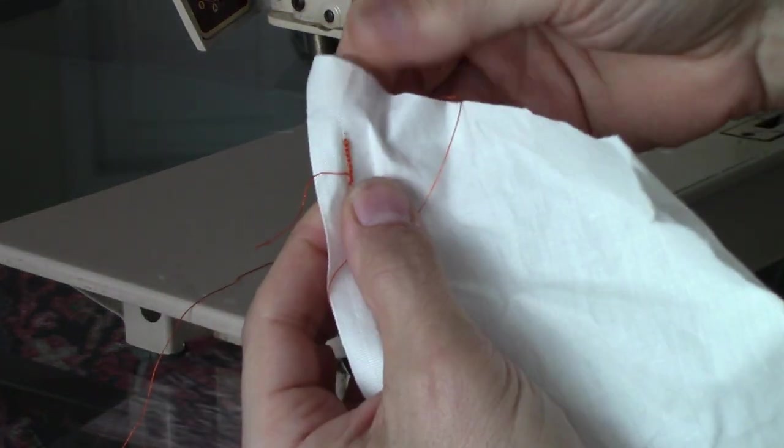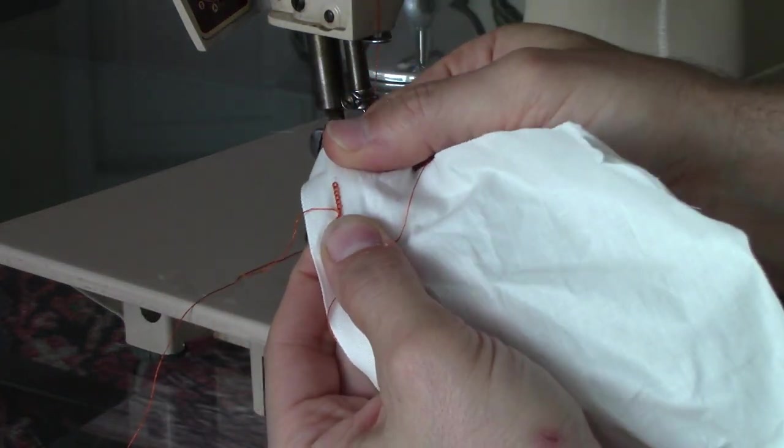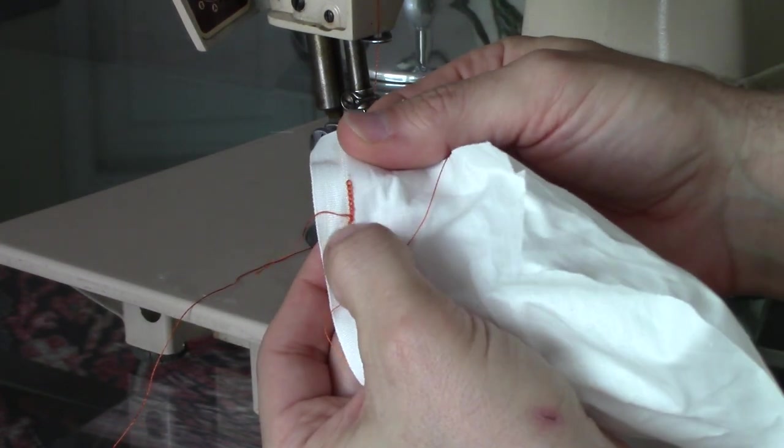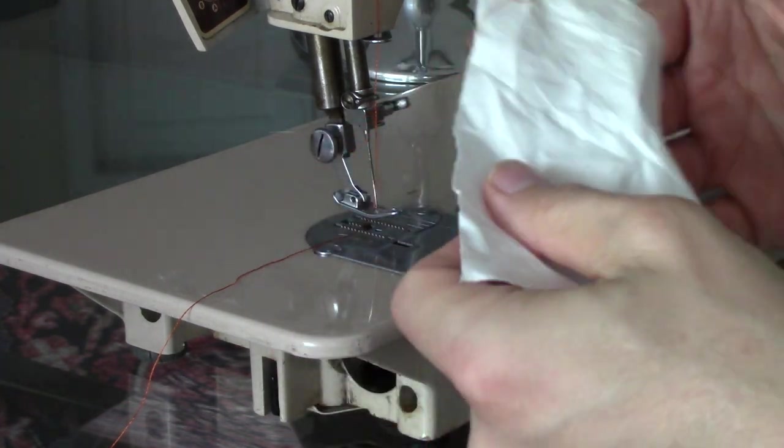So when I set that on chain stitch, it's just, must be about 15. It gives that perfect chain there. And you can adjust how you want that to look.